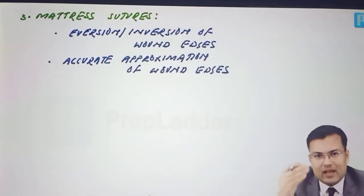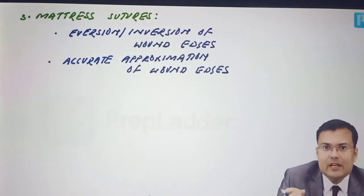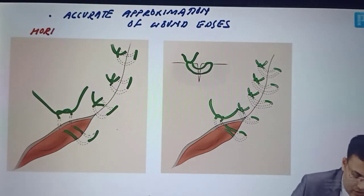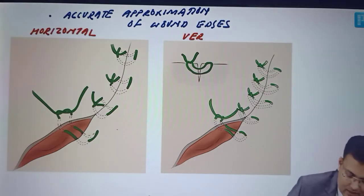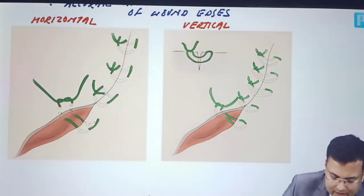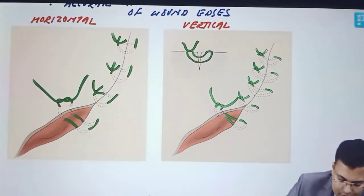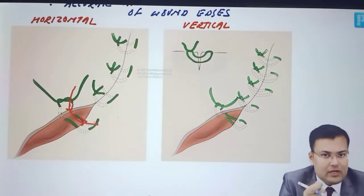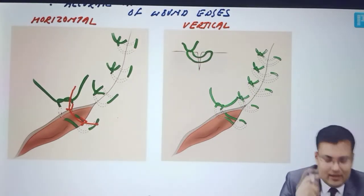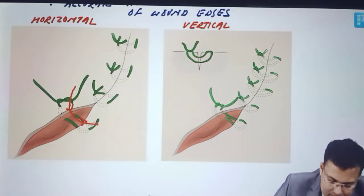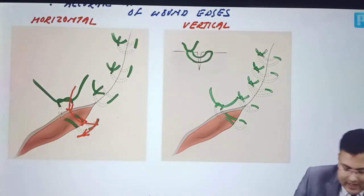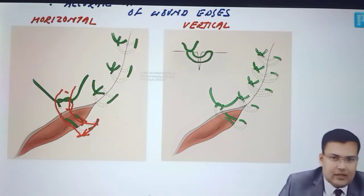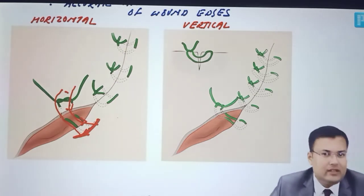There are two types of mattress sutures: horizontal mattress and vertical mattress. It is very easy to remember and differentiate. For horizontal mattress, the needle is going to pierce the skin edges at right angle — the initial suture is taken like a simple interrupted suture. When the needle is taken out, it moves horizontally and again pierces the wound edges, then knots are tied. Since it is traversing horizontally, this is horizontal mattress.